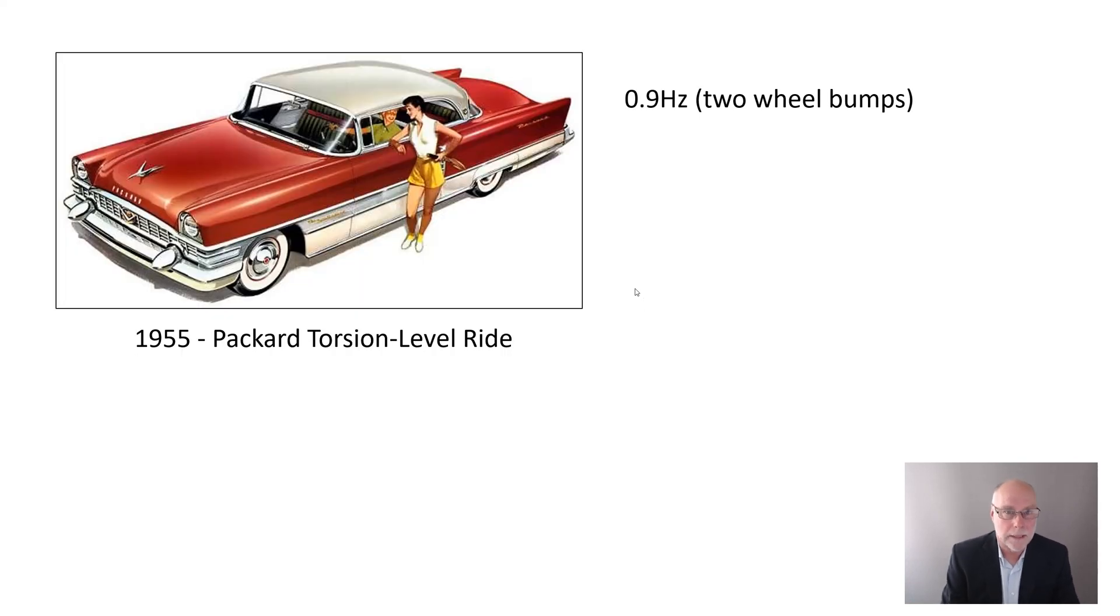What about another stunning car? A stunning suspension system on this car. Packard, torsion level ride, interconnected front rear by means of torsion bars, as opposed to the links used on the 2CV. 1955.